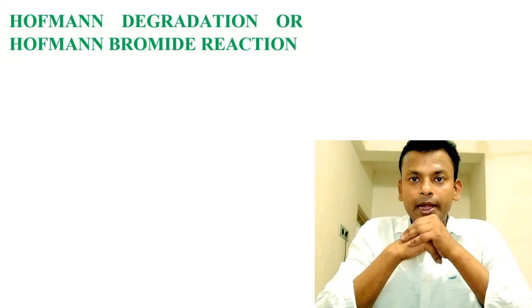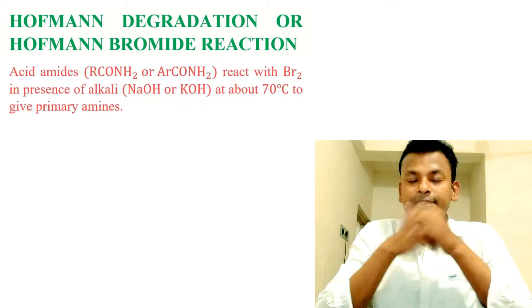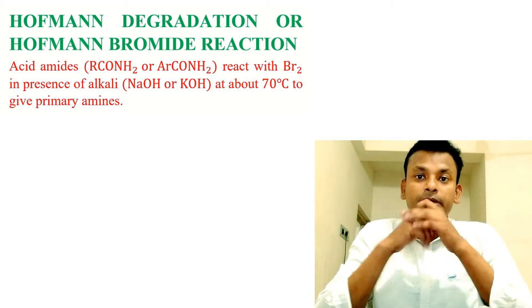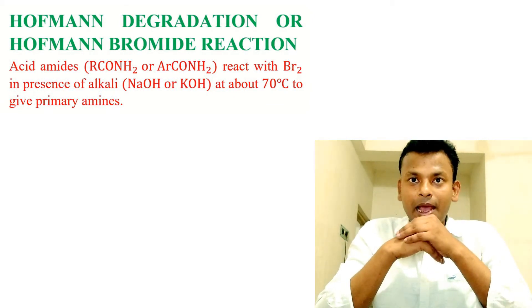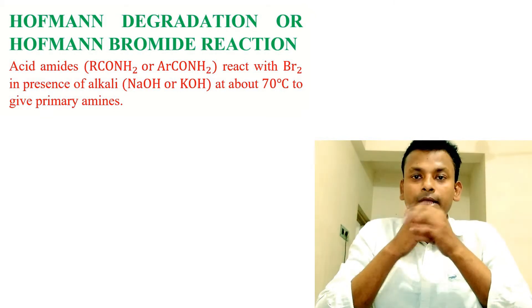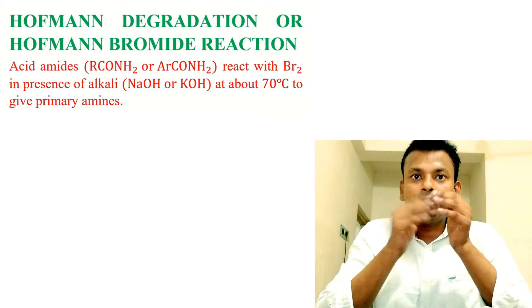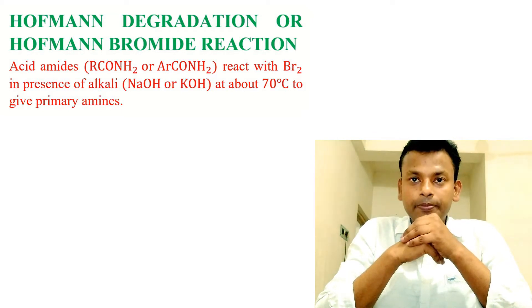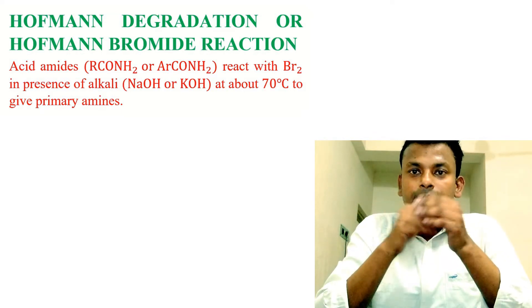Acid amides react with Br2 in presence of alkali, that is NaOH or KOH, at about 70 degrees Celsius to give primary amines. This is the reaction.